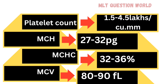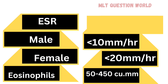Platelet count should be 1.5 to 4.5 lakhs per cubic millimeter. MCH (mean corpuscular hemoglobin) is 27 to 32 picograms. MCHC (mean corpuscular hemoglobin concentration) is 32 to 36 percentage. MCV (mean cell volume) is 80 to 90 femtoliters. ESR: in males less than 10 mm/hour, in females less than 20 mm/hour. Total eosinophil count should be 50 to 450 per cubic millimeter.